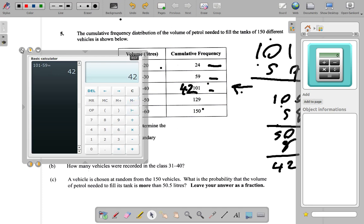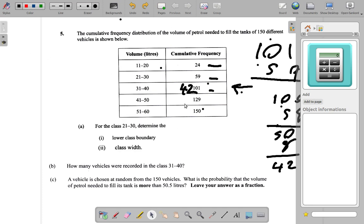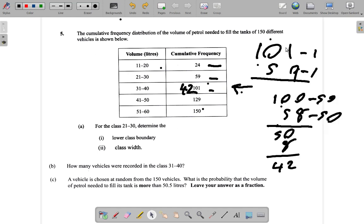So 42 were in the class 31 to 40. Let's look back at it a little more. Let me erase these and go back to it.